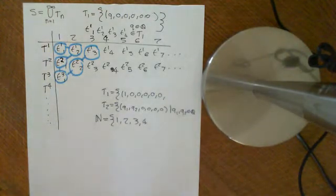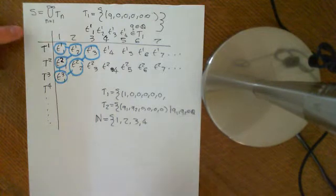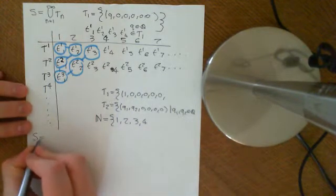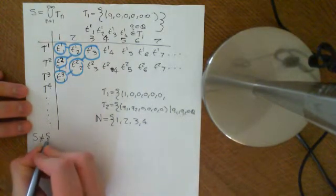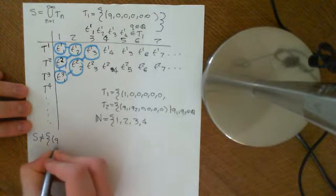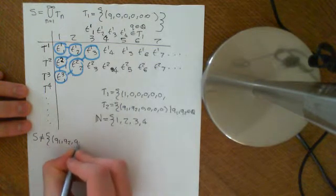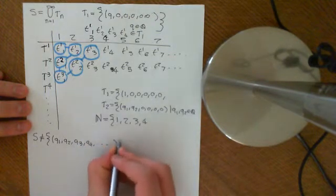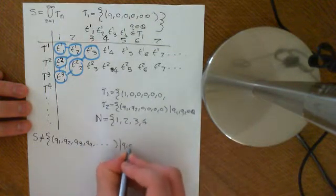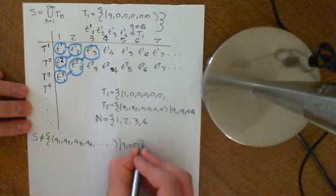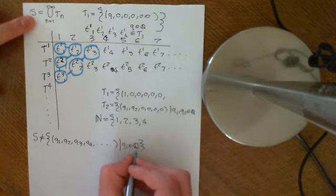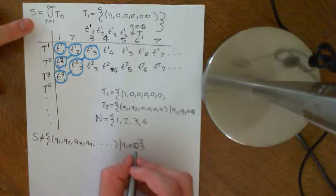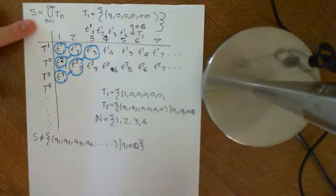I want to explain to you why this set S is not equal to the set of all sequences, all infinite sequences of rational numbers. So Q1, Q2, Q3, Q4, etc., where all of the terms are just rational numbers. Because intuitively, that seems to be what this is going to converge on, but that is not the case. And I want to explain why.